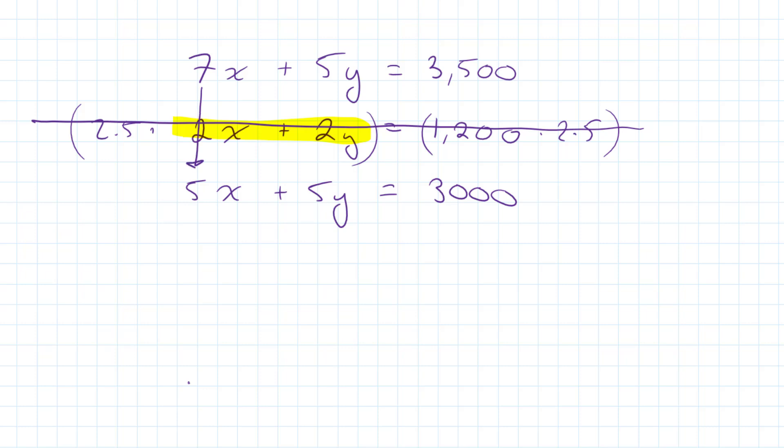7 minus 5, that will be 2. So that will be 2x plus 5 minus 5 is 0. 0y, so 0y is equal to 0. That will be equal to 500.